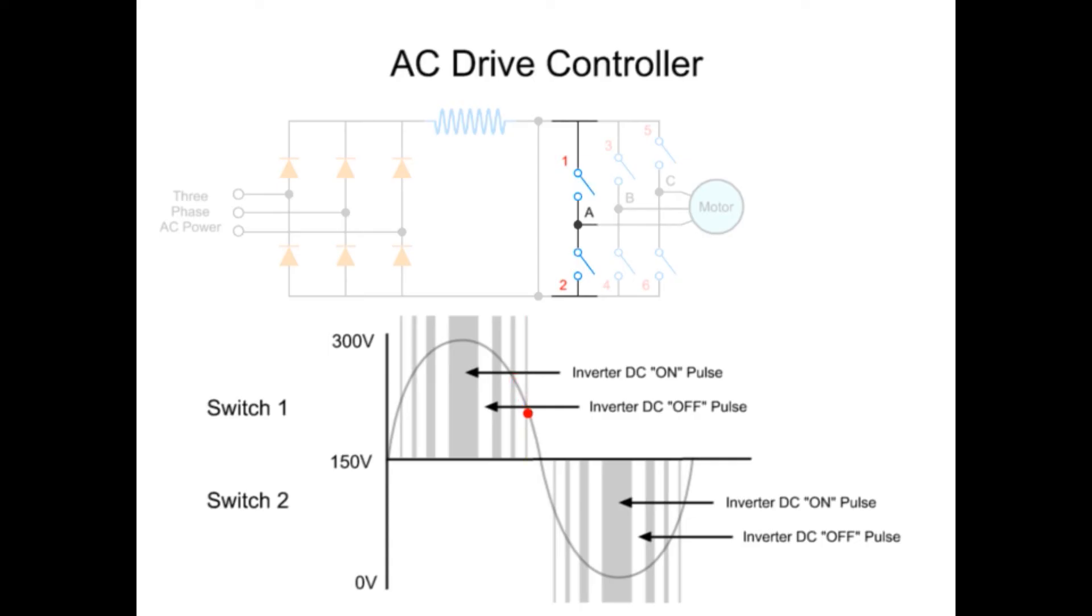This duration of on time for each pulse is called pulse width. The time duration and intervals of these DC voltage pulses determine the synthesized AC output voltage and frequency.